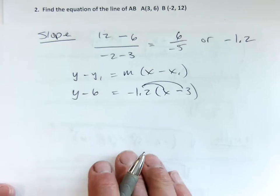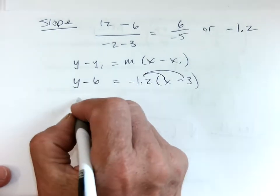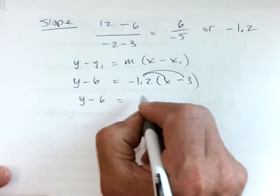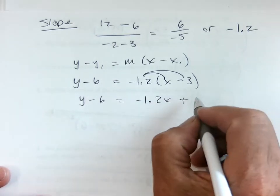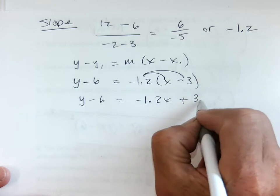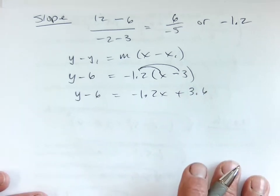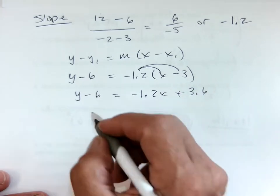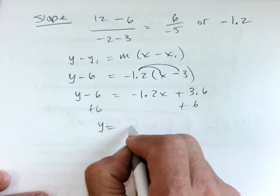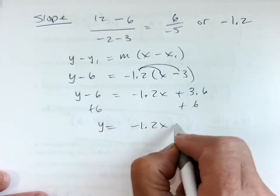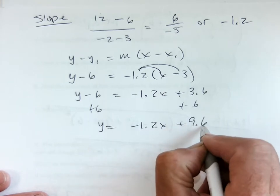My slope is a negative 1.2x minus 3, because that's my x value. Or if you use y equals mx plus b, you guys know how to do that. I'm going to distribute negative 1.2x plus 3.6, right? Yeah, I can do that math. And then plus 6 plus 6.